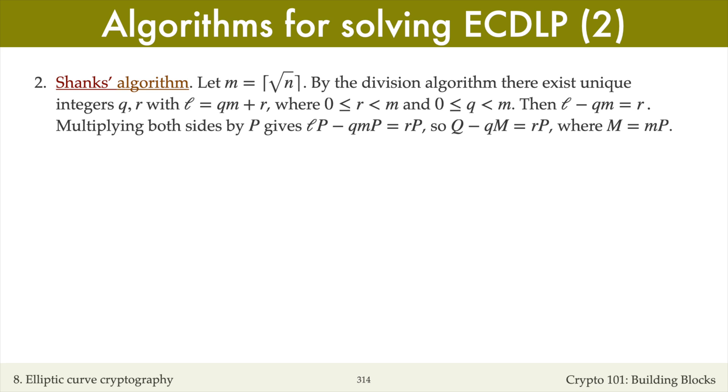Here's the main idea of the attack. I'll define m to be the square root of n rounded up. By the division algorithm for integers, there exist unique integers q and r such that l equals q times m plus r. Here, r is a remainder which is between 0 and m minus 1, and q is a quotient which is non-negative.